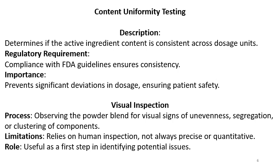Visual inspection involves observing the powder blend for visual signs of unevenness, segregation, or clustering of components. If colored material or colorant is used in blending, it can be observed visually. Many times, some materials form clumps or lumps, which can also be observed. Visual inspection has limitations — it relies on human inspection and is not always precise or quantitative — but it is useful as a first step in identifying potential issues.